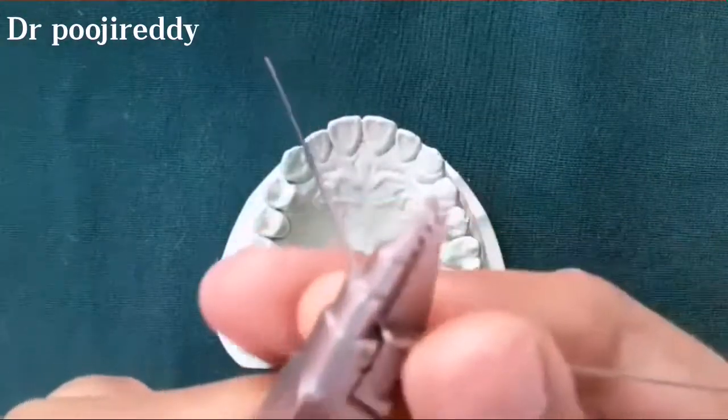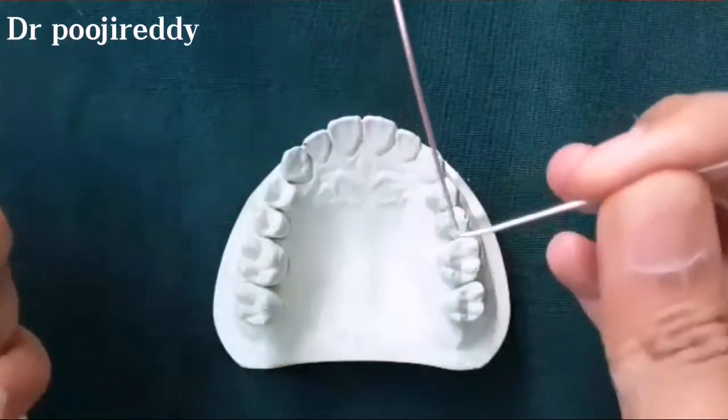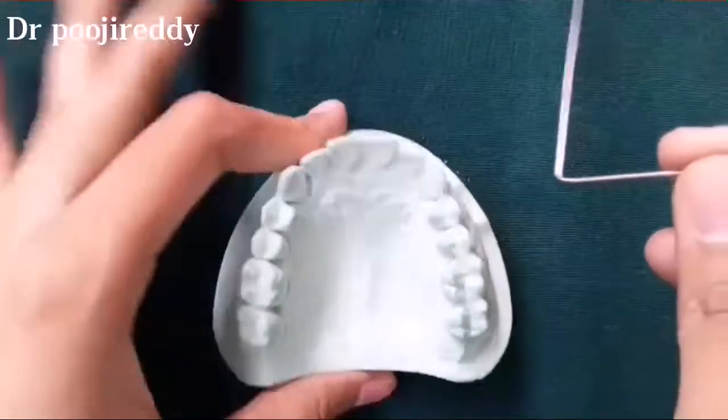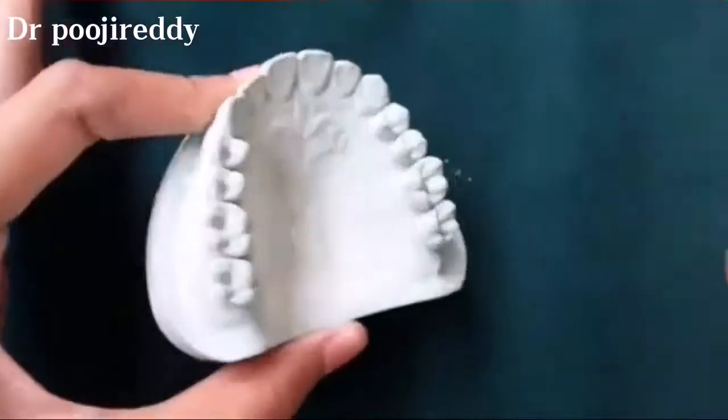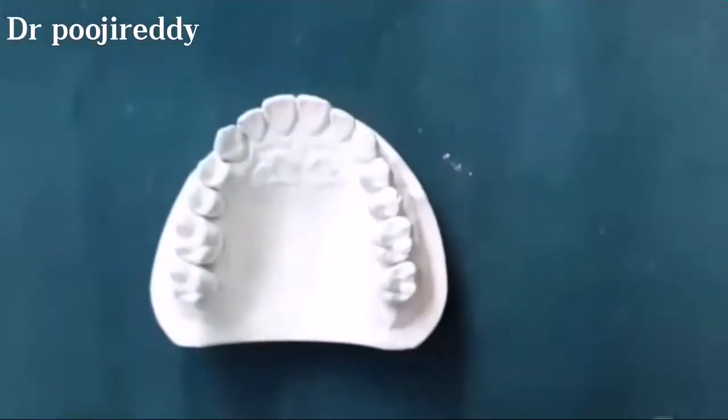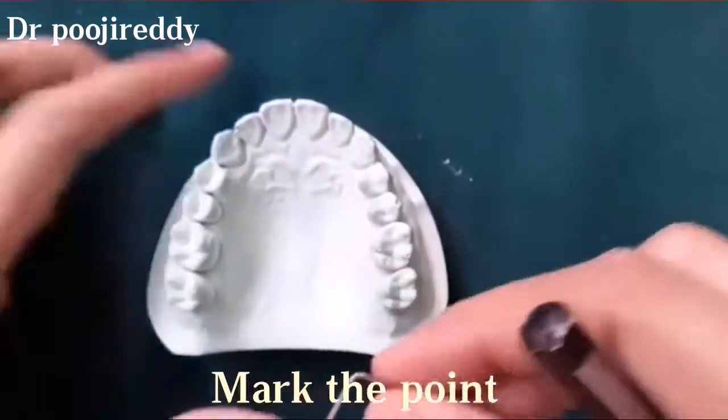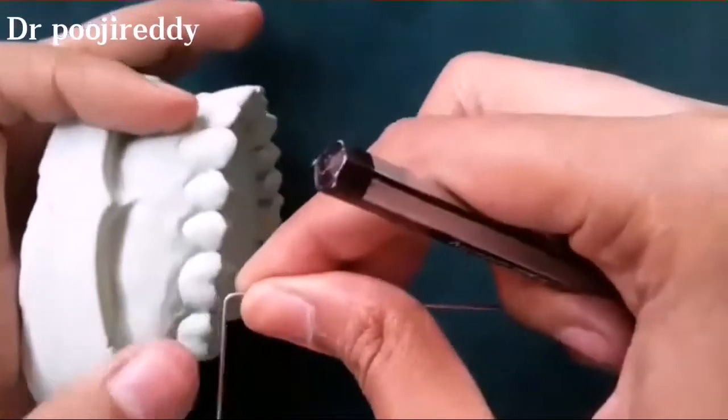The bend should be sharp. Now I am marking the second point, that is the mesial undercut. The distance between the mesial and distal undercut will be the length of the bridge.